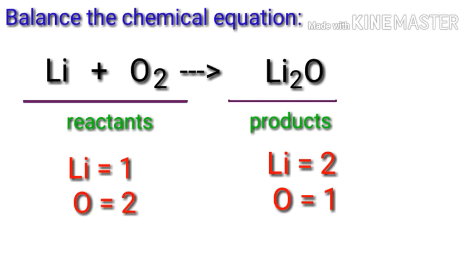To balance the chemical equation we need to make use of coefficients. A coefficient is a number that we place in front of a chemical formula.